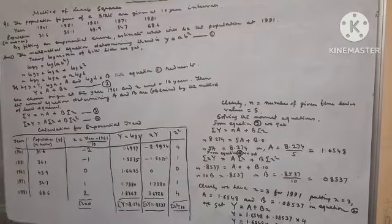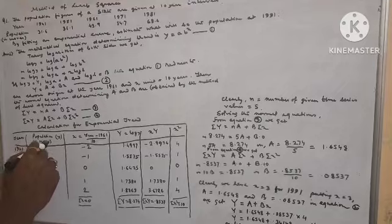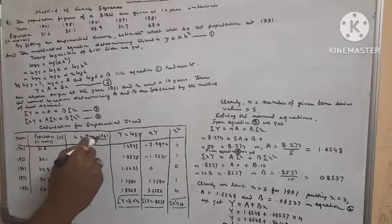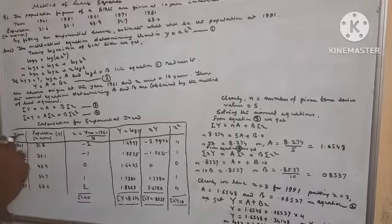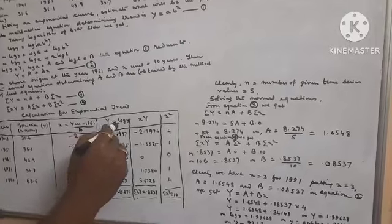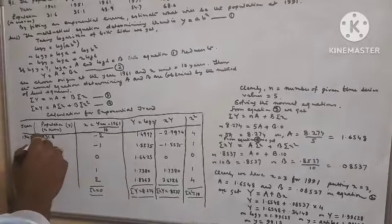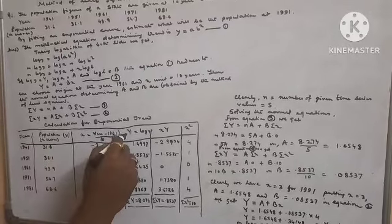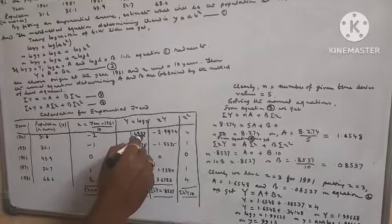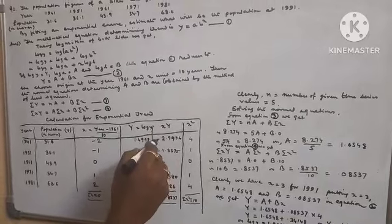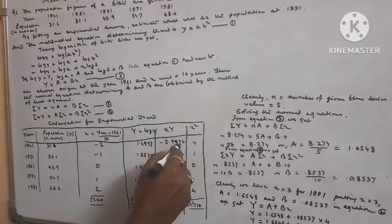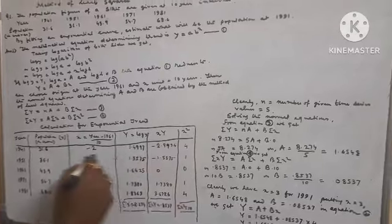Calculation for exponential trend. For year 1941, population y = 31.6. x = (1941 − 1961) / 10 = −2. Capital Y = log 31.6 = 1.4997. x·Y = 1.4997 × (−2) = −2.9994. x² = (−2)² = 4.